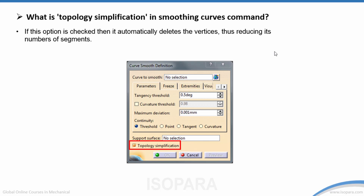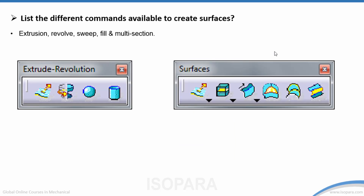What is topology of simplification in the smoothing curve command? If this option is checked, it will automatically delete the vertices, thus reducing the number of segments.